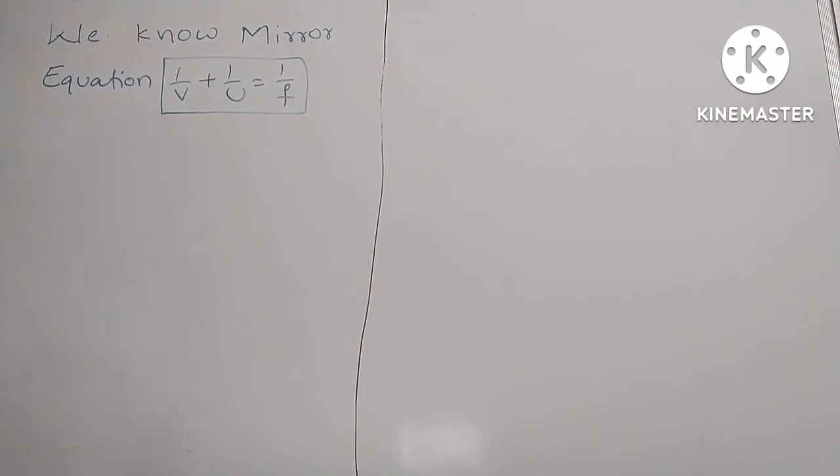My dear students, today I will explain 1 by v and 1 by u graph based on mirror equation. We know mirror equation: 1 by v plus 1 by u equal to 1 by f.